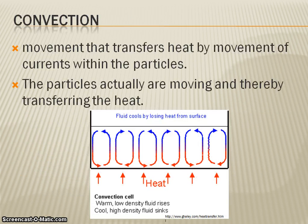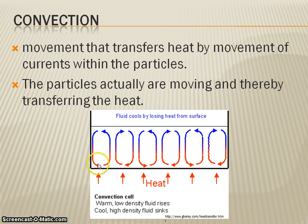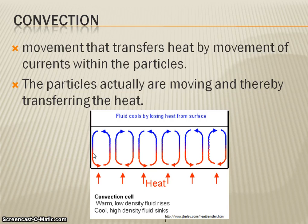Convection is movement within a fluid caused by differences in density. Less dense things float. When things get warmer, they expand, become less dense, and move up in a fluid. As things cool and become more dense, they sink. This causes a cyclical motion in fluids. By fluids we mean air is a fluid and water is a fluid, so both gases and liquids are considered fluids, and convection occurs in gases and liquids.